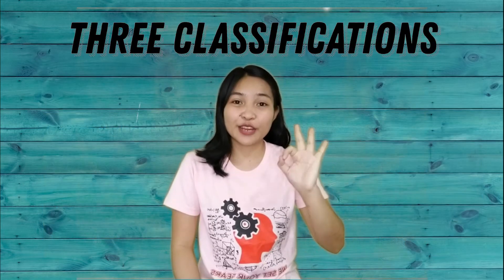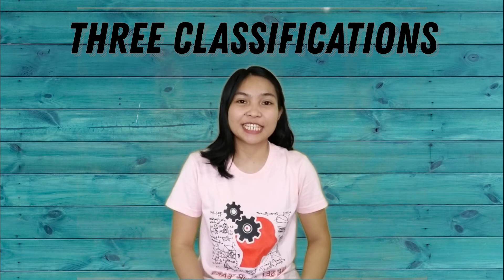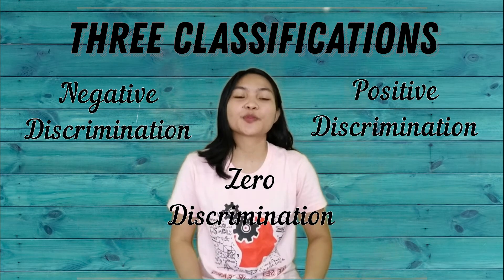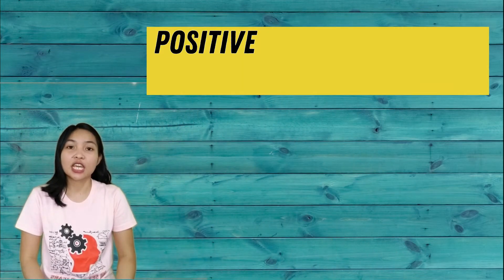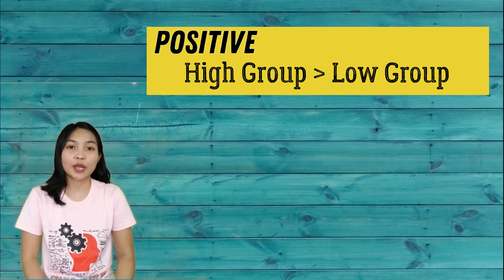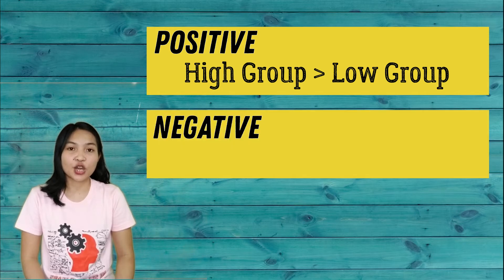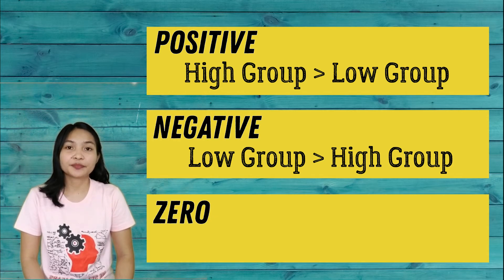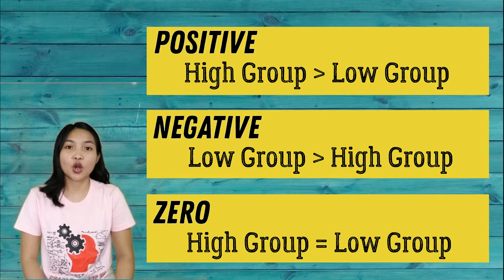There are three classifications of discrimination index: positive discrimination, negative discrimination, and zero discrimination. Positive discrimination means the proportion of students who got the item right in the upper group is greater than the lower group. Negative discrimination means the lower group proportion is greater than the upper group. Zero discrimination means the proportion of high and low performing students who get the item right is equal.